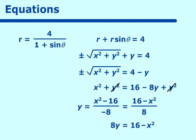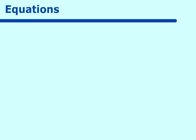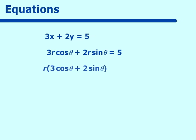Let's go the other way — from rectangular to polar. If we have 3x + 2y = 5 and want to convert to polar: substitute x = r cosθ and y = r sinθ to get 3r cosθ + 2r sinθ = 5. Factoring out r, we get r(3 cosθ + 2 sinθ) = 5, so r = 5 / (3 cosθ + 2 sinθ). These are fairly simple conversions, though they can be far more difficult. I'm just trying to give you a sense of what is going on.